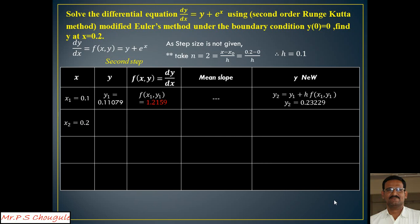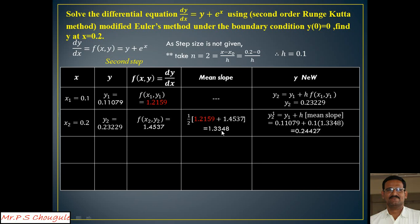The step size is 0.1, so x2=0.2, and y2=0.23229. Now we need to iterate to improve y2. At the current values x2=0.2 and y2=0.23229, the function equals 1.4537. We now have two slopes: 1.2159 as the first slope and 1.4537 as the second. Their average gives mean slope = 1.3348.